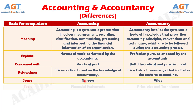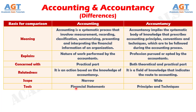Difference number 6: The primary tool of accounting is the financial statements, that is, trading and profit and loss account, balance sheet, and cash flow statement. On the other hand, the accounting principles, standards, rules, concepts, and conventions are the tools of accountancy.